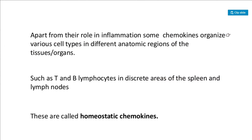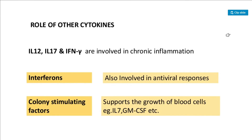Apart from their role in inflammation, some chemokines organize various cell types in different anatomic regions of tissues and organs — for example, T and B lymphocytes into discrete areas of the spleen and lymph nodes. These are called homeostatic chemokines. So homeostatic chemokines organize the positions of T and B lymphocytes in the spleen and lymph nodes.